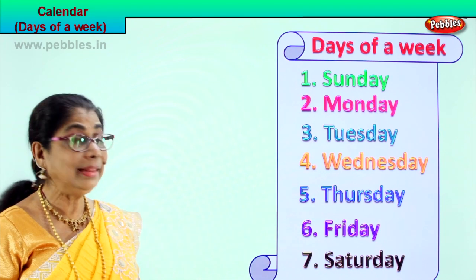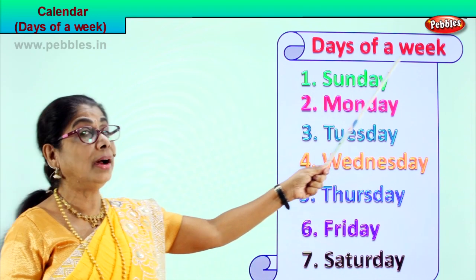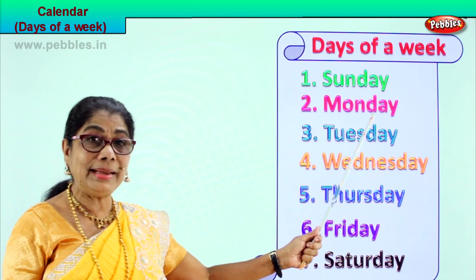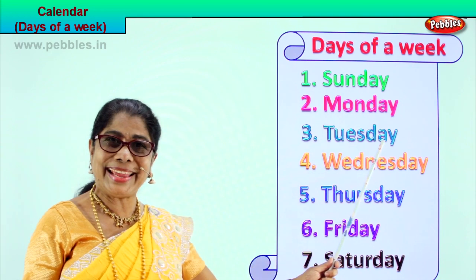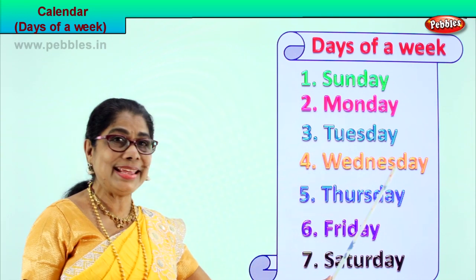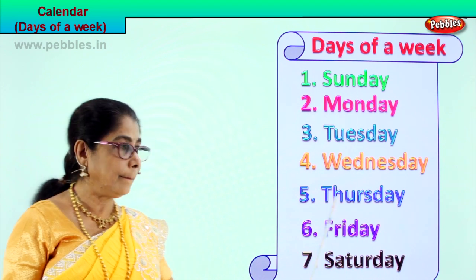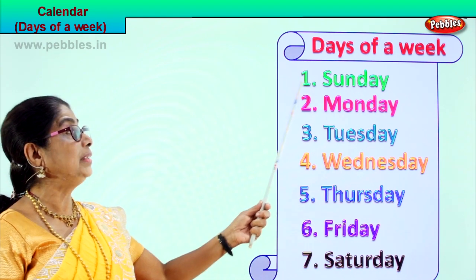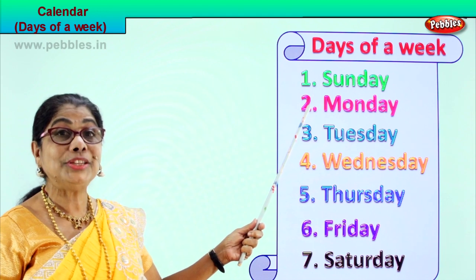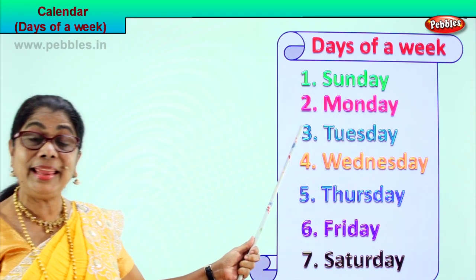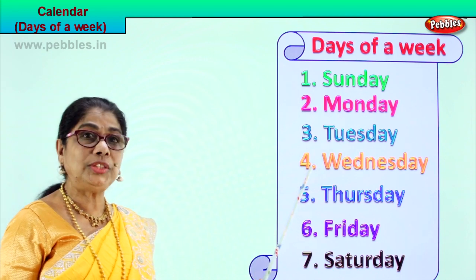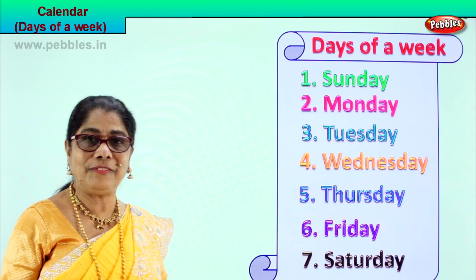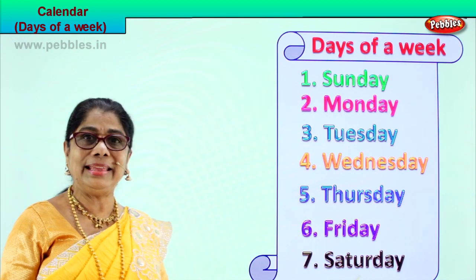Read this for me. Days of a week. First, Sunday. Next, Monday. Next, Tuesday. Next, Wednesday. Next, Thursday. Next, Friday. Saturday. Look at the ordinal form: First, Sunday. Second, Monday. Third, Tuesday. Fourth, Wednesday. Fifth, Thursday. Sixth, Friday. And the seventh day is Saturday.